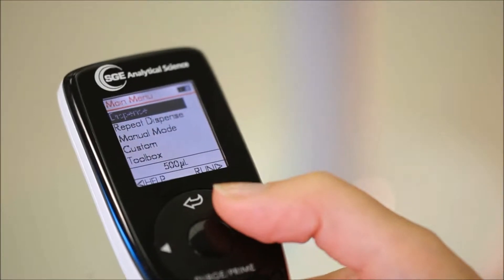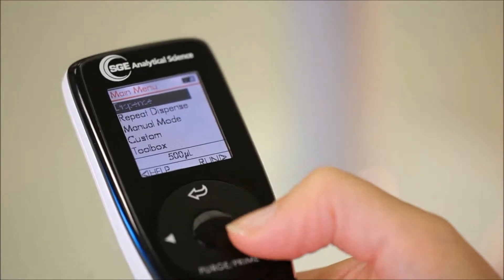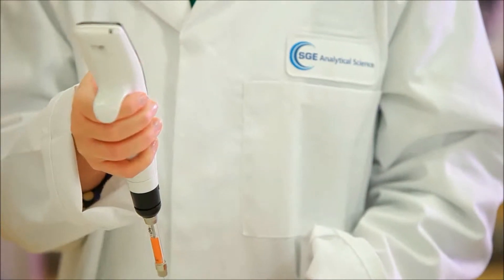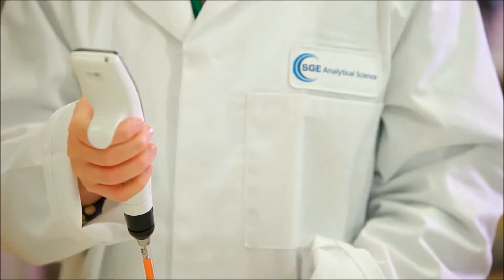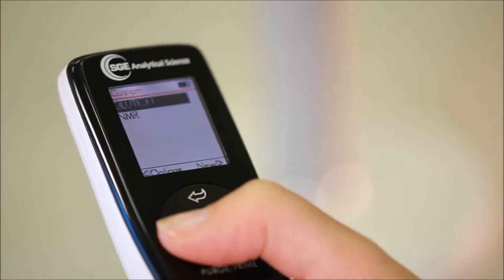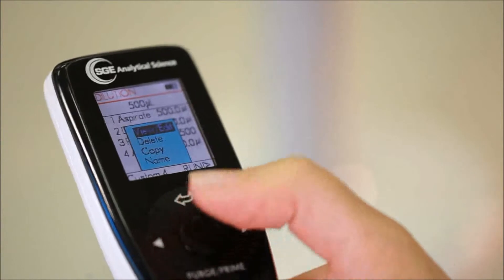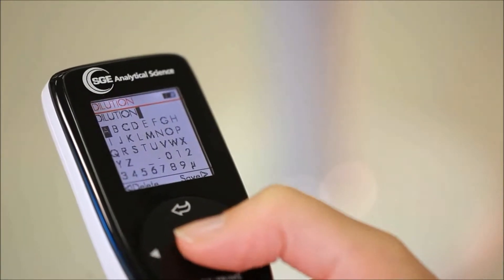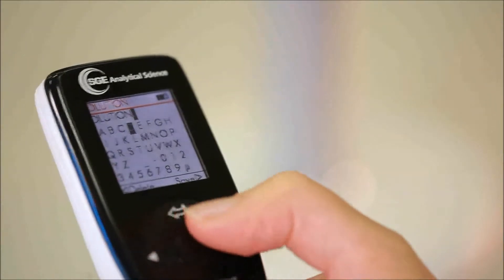To create and save a new custom program, just use the touch wheel to select the custom option from the main menu. Then, it's easy to follow the on-screen prompts to create programs uniquely suited to a variety of tasks. After the custom program is saved, users can name their program by selecting the name option for later identification.